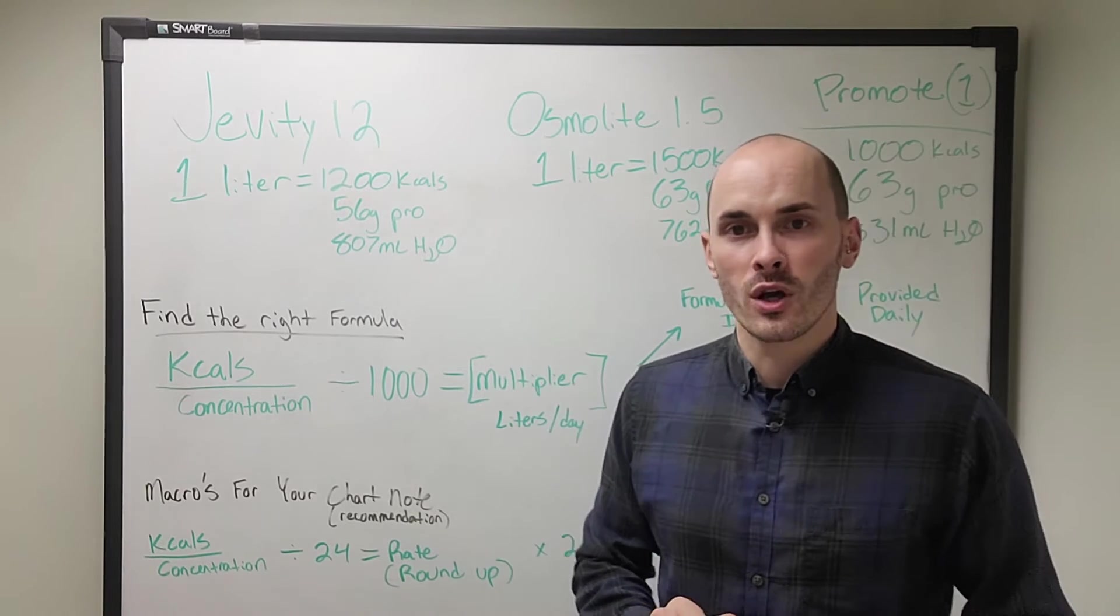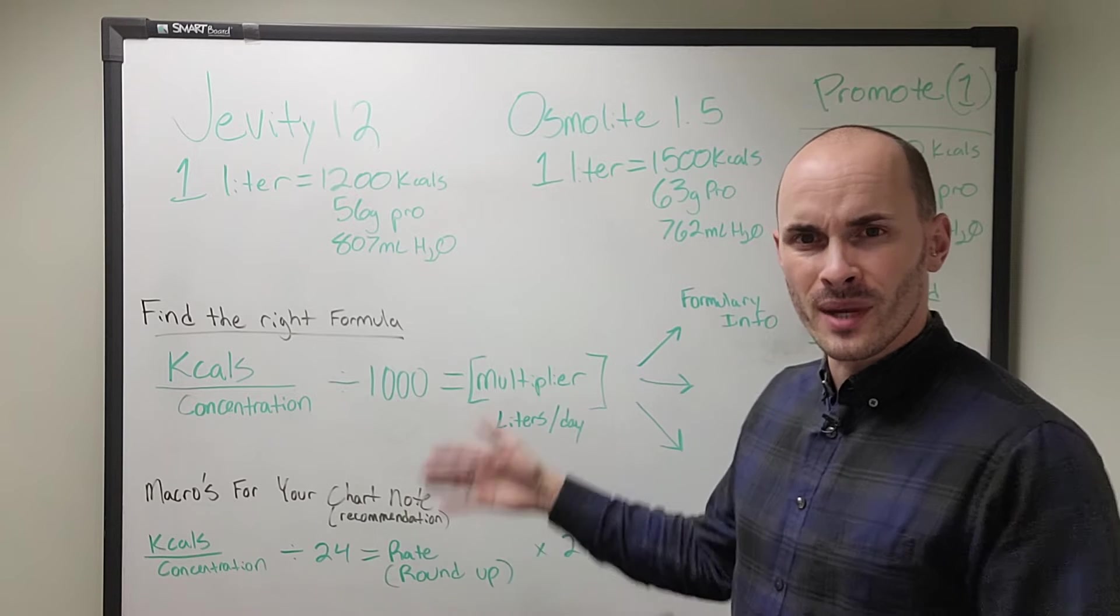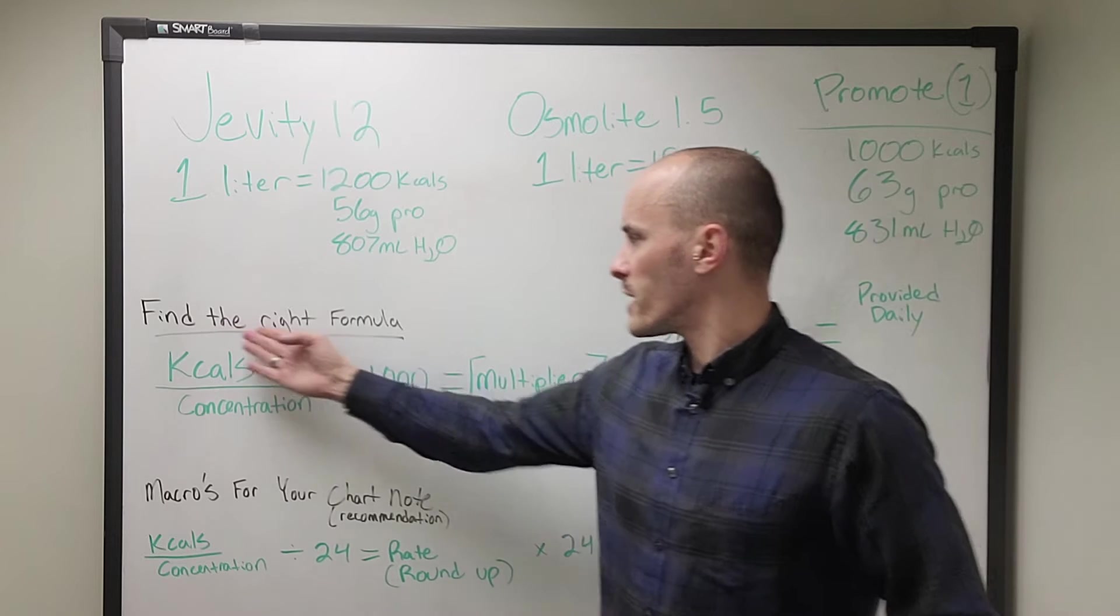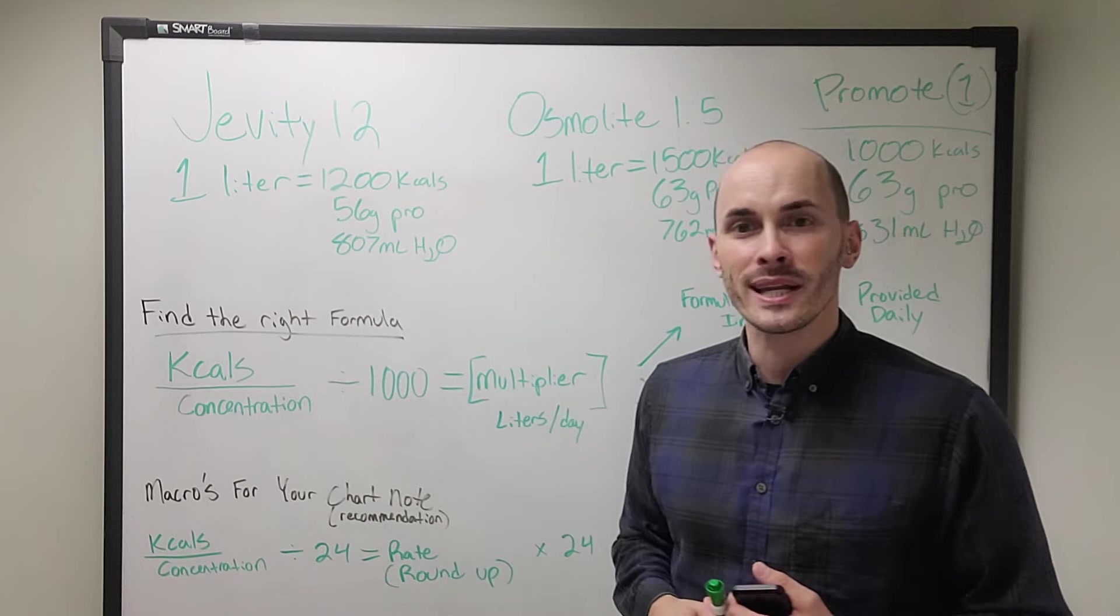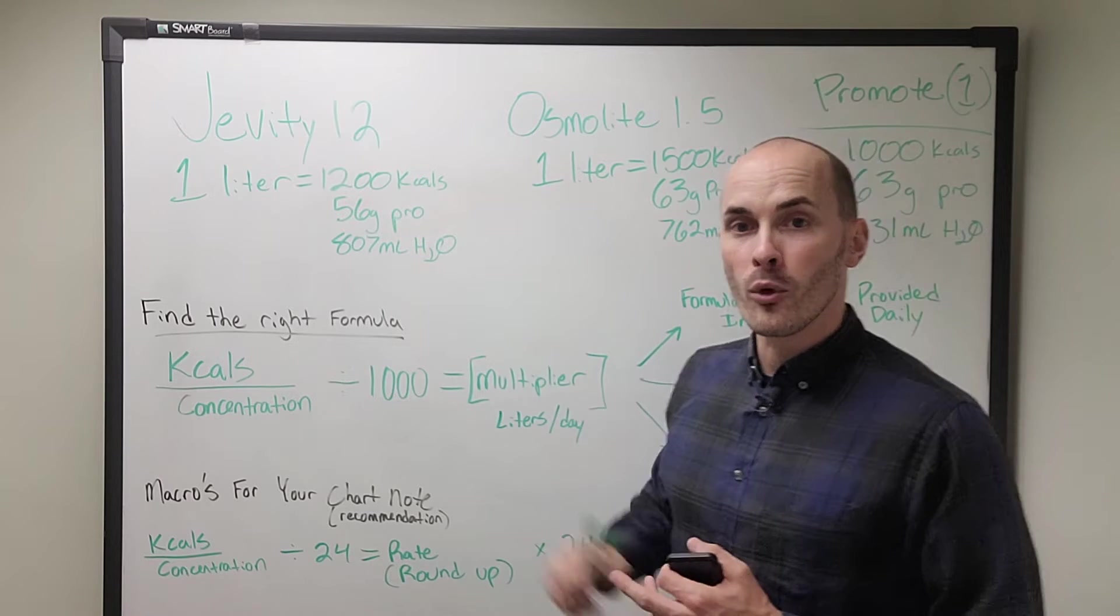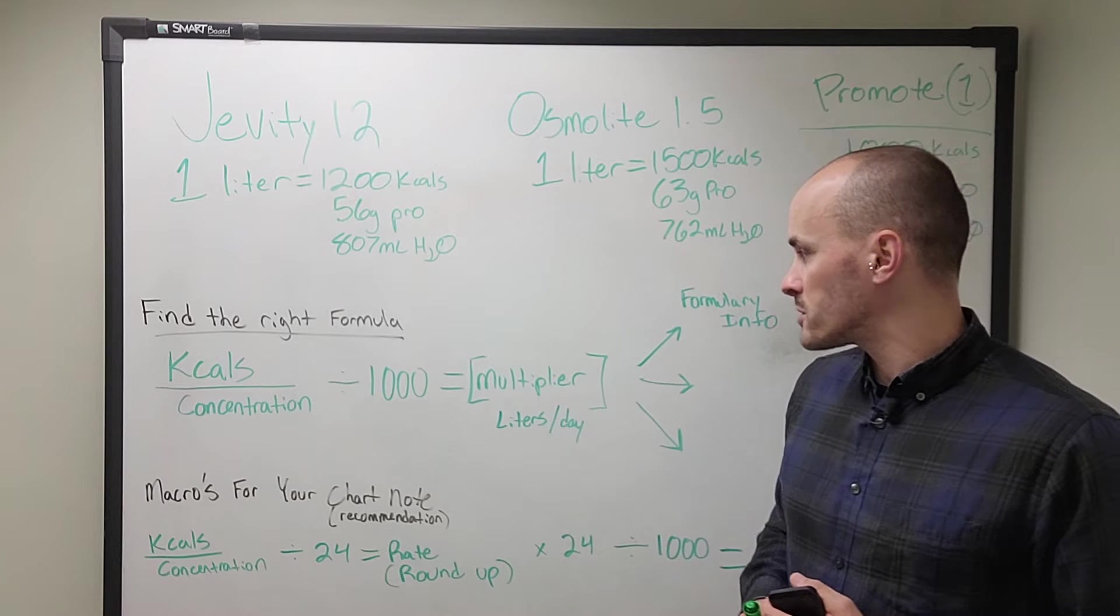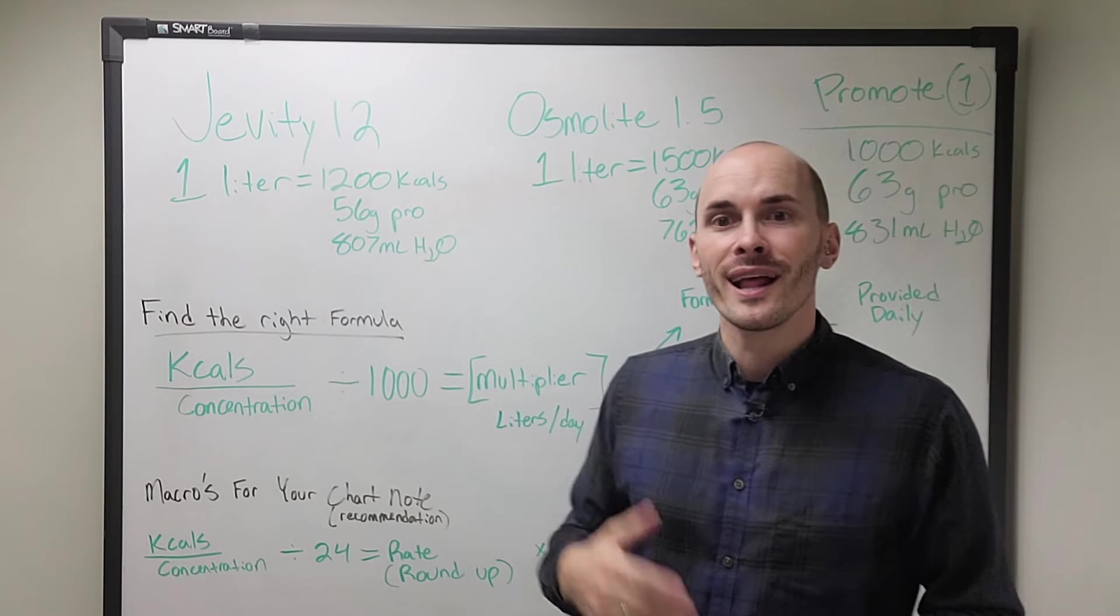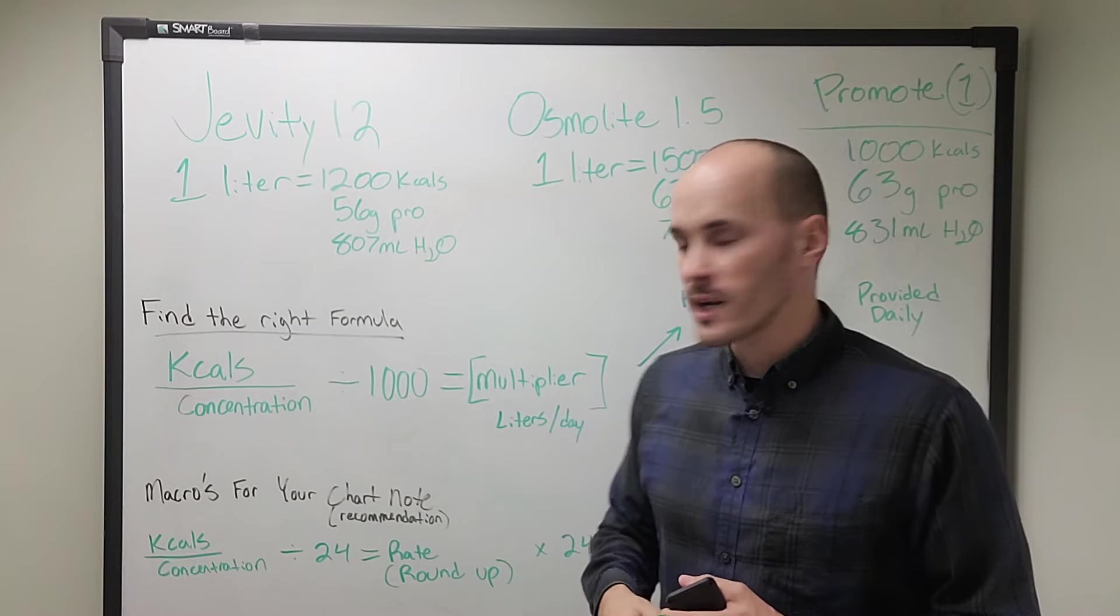And so I actually wrote out the equation that I use. So what you should do is go down to the description and copy and paste this equation or copy it here right from the screen if I'm not able to type it down below. I'll try my best. But if you're looking to find the right formula, this is the first equation you want to use. We're going to take your estimated calorie needs for that patient and divide it by the concentration of that formula, whether it's a 1.2, a 1.5 or a 1 cal. And then we're going to divide by 1000. This will give us our multiplier.